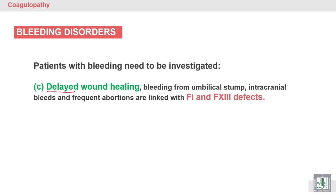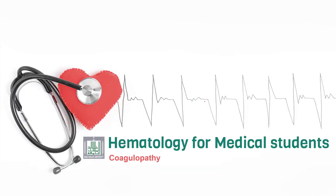Bleeding from the umbilical stump of a newborn, intrauterine bleeding, and frequent miscarriage in pregnant women are linked with deficiency of factor 1 (fibrinogen) and factor 13.